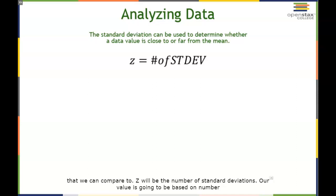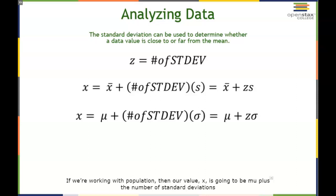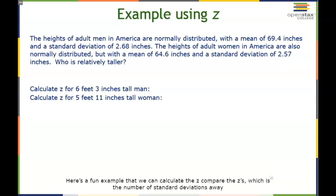Z will be the number of standard deviations a value is away from the mean. For a sample, the value X equals x-bar plus Z times S. For a population, X equals mu plus Z times sigma. Here's a fun example where we calculate and compare Z scores — the number of standard deviations from the mean — for two different data sets: heights of men and heights of women.